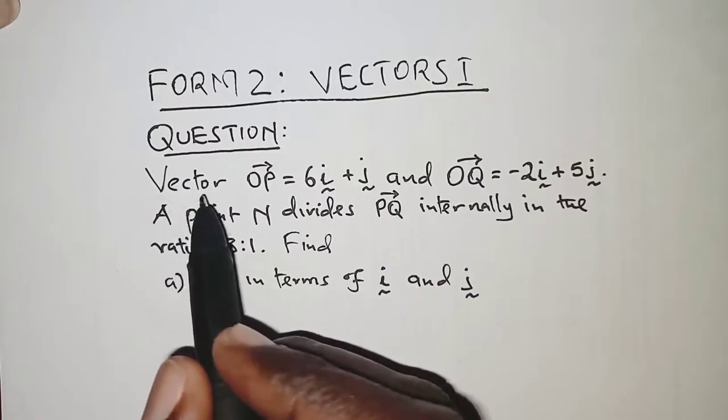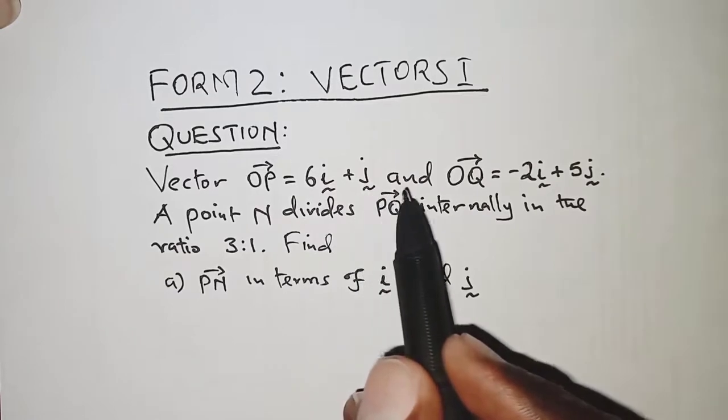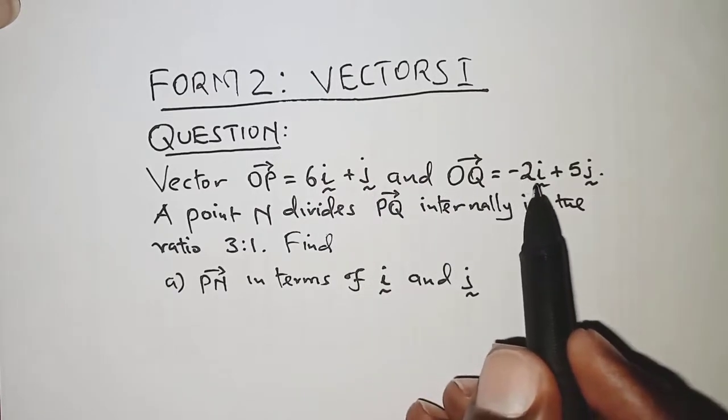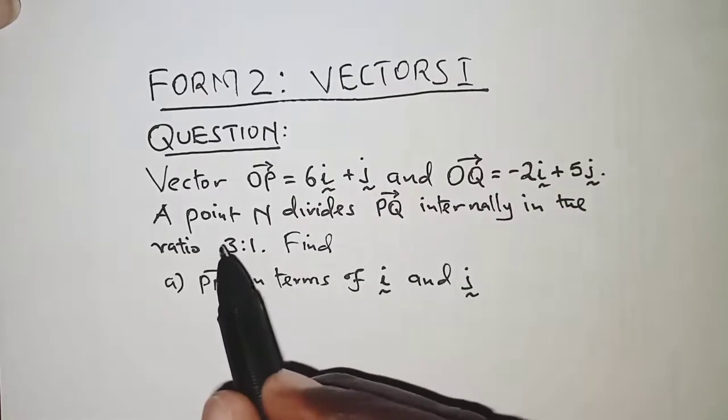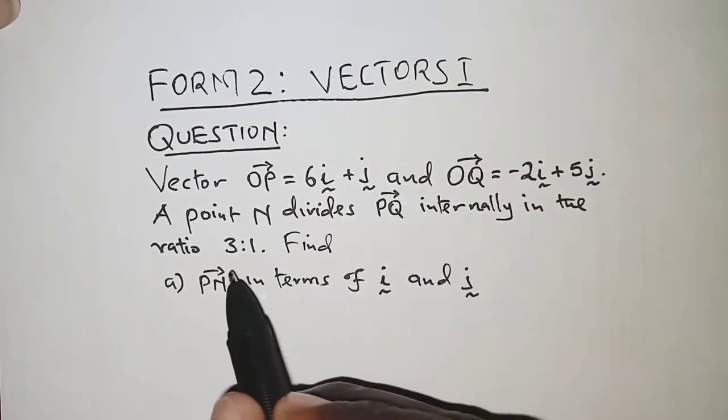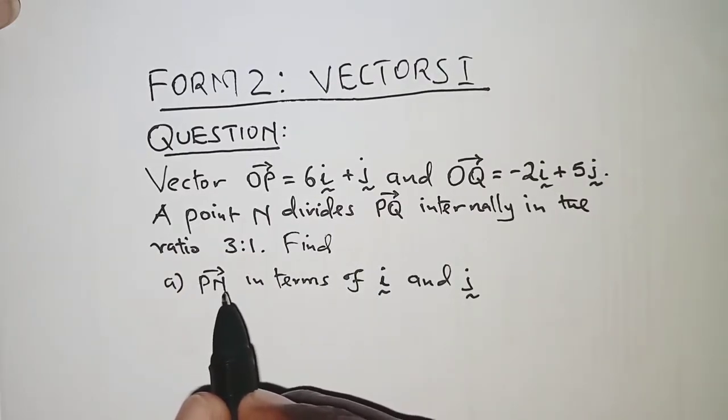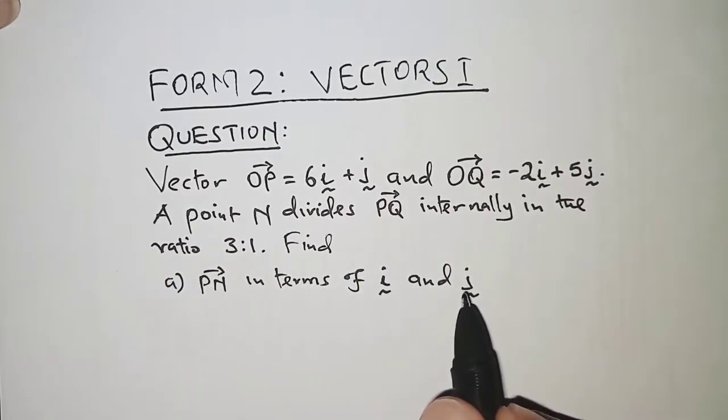The question goes: vector OP is 6i plus j and OQ is negative 2i plus 5j. A point N divides PQ internally in the ratio 3 to 1. Find PN in terms of i and j.